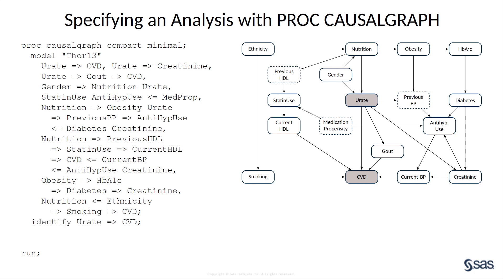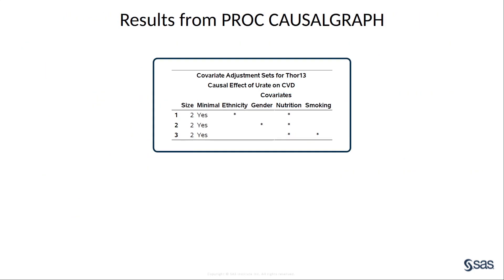You use the IDENTIFY statement to specify the treatment and outcome variables for the causal effect you would like to estimate. Finally, you use the UNMEASURED statement to specify the variables that are unmeasured. The primary result from PROC CAUSALGRAPH is the table of valid adjustment sets. For this example, there are three adjustment sets that you can use to estimate the causal effect of interest.